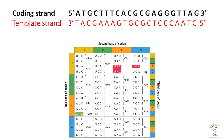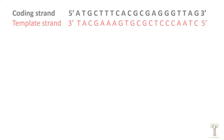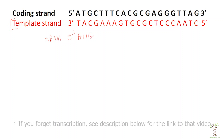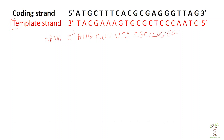Pause the video and see if you can figure out what the protein sequence will be. We have a template strand and a coding strand. The template strand is what RNA polymerase uses for transcription to produce the messenger RNA, which will be anti-parallel. So the messenger RNA sequence is — 5' — AUG, CUU, UCA, CGC, GAG, GGU, UAG — 3'. We make the messenger RNA by finding the complementary nucleotides to the template strand of the DNA.